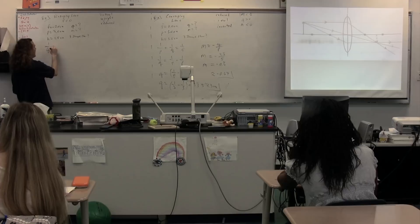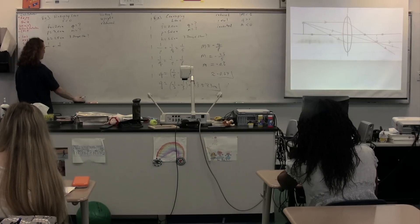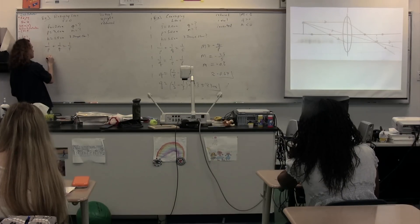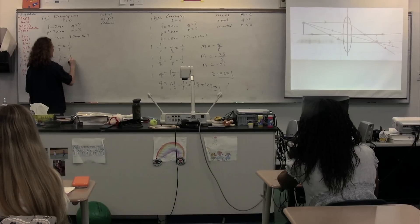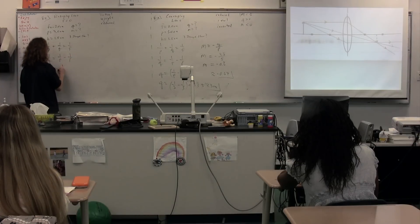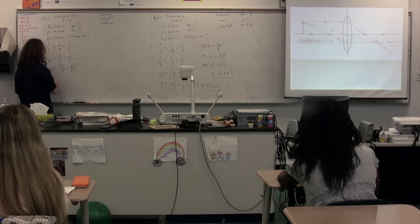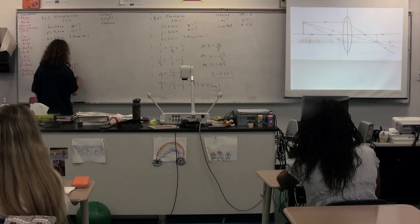Again, the math is exactly the same. One over the image, one over the object distance plus one over the image distance is equal to one over the focal length. We can solve for the image distance. One over the image distance equals one over the focal length minus one over the object distance. Therefore, the image distance is equal to one over the focal length minus one over the object distance, all to the negative one power. Therefore, the image distance is equal to one over negative two minus one over five to the negative one power.